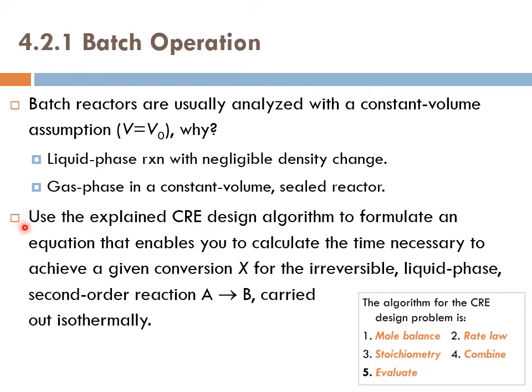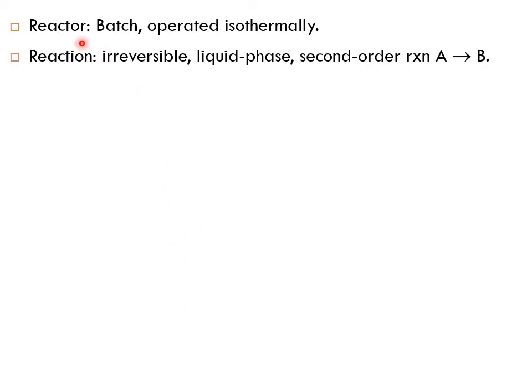Now use the explained CRE, chemical reaction engineering design algorithm, the five-step algorithm, to formulate an equation that enables you to calculate the time necessary to achieve a given conversion X for the irreversible liquid phase second order reaction A goes to B carried out isothermally. So let's do this together. Remember, the reactor was a batch reactor operated isothermally, and the reaction was irreversible reaction, liquid phase second order reaction A goes to B.